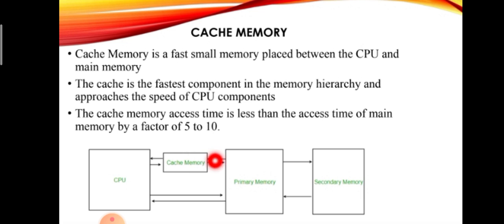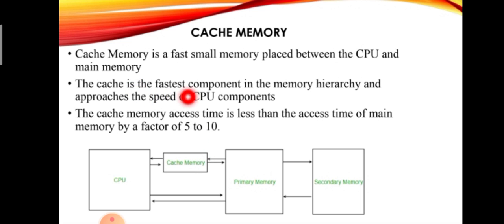The cache memory is the fastest memory. Cache memory is the fastest memory between CPU and main memory. Cache is the fastest component in the memory hierarchy and approaches the speed of CPU components. The first register is the cache in cache memory. There are more values in the register for storage.